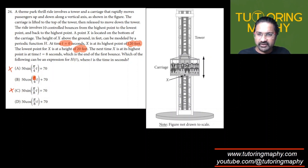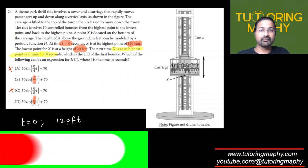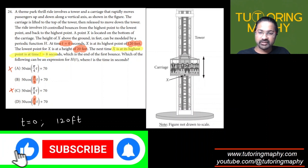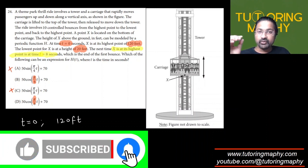Now whether it's B or D, the only difference is the π/4 and π/8, and that's where the other information comes in. The next time X is at the highest point is at t equals 8, which means if we put t equals 0 it shows 120 feet. At the next time when we're expecting it to have a maximum, that is t equals 8, which means that its time period is 8 seconds.